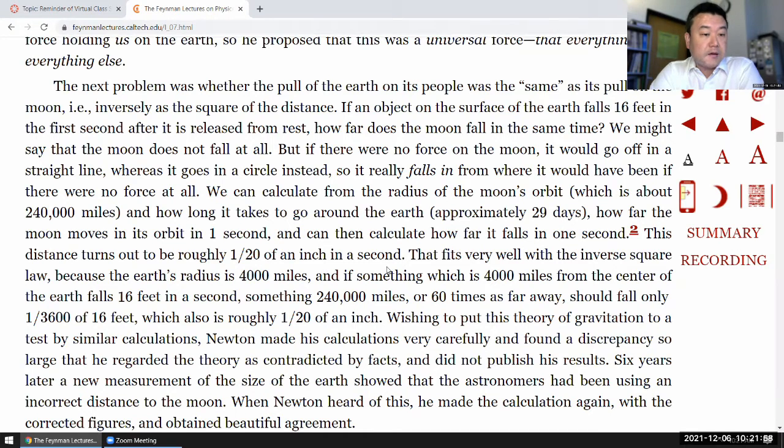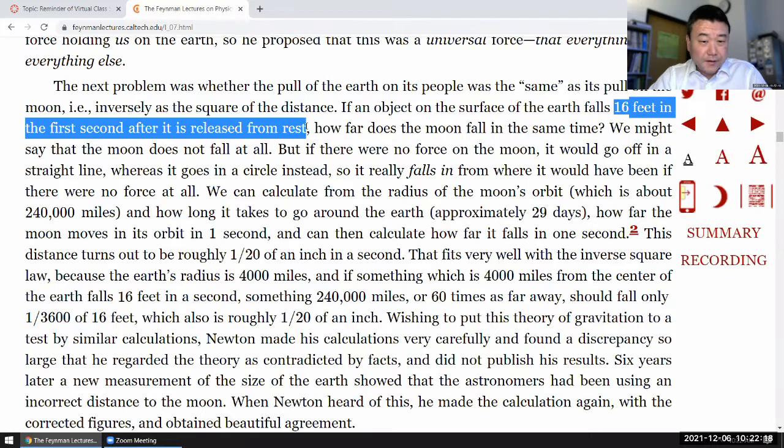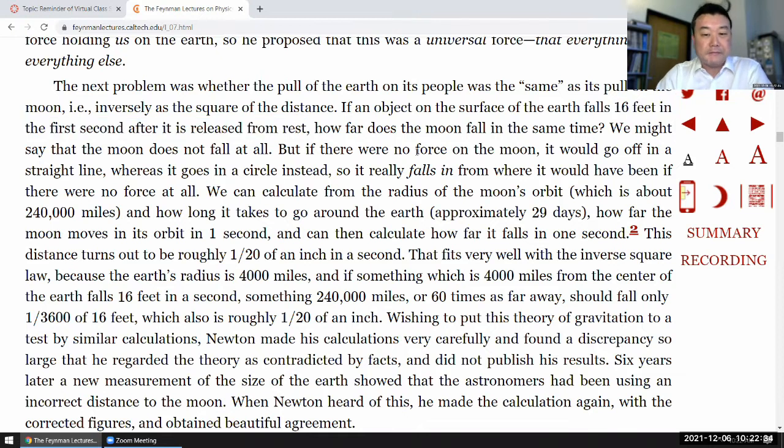The next problem was whether the pull of the Earth on its people was the same as its pull on the moon. That is, inversely as the square of the distance. If an object on the surface of the Earth falls 16 feet in the first second after it is released from rest. This, by the way, is a summary of the mechanics thing that you learned. The gravitational acceleration in the imperial unit is 32 feet per second squared. So, when you work out the kinematics for one second, falling from rest, it'll work out to be 16 feet. You can do the kinematics yourself.